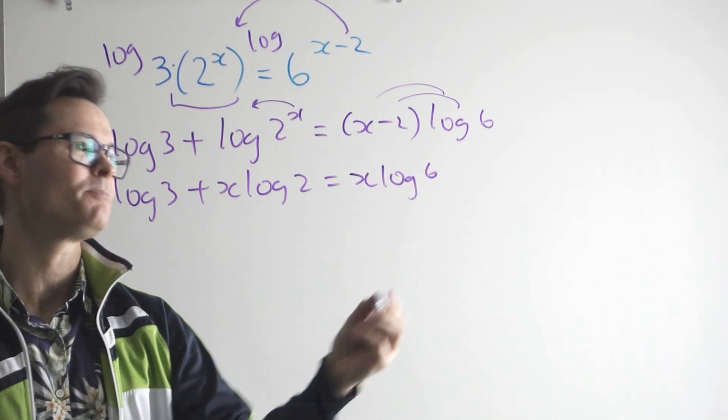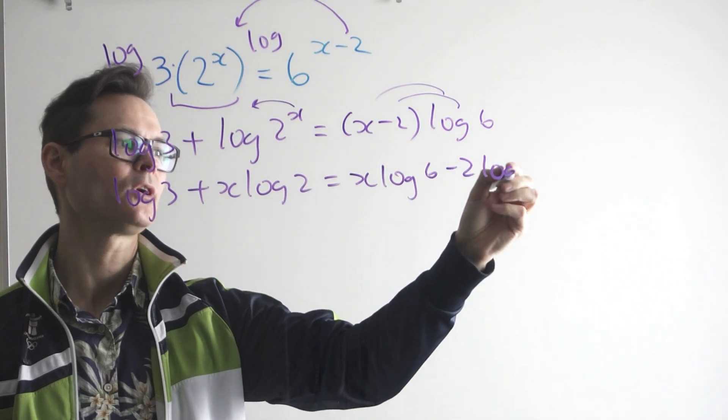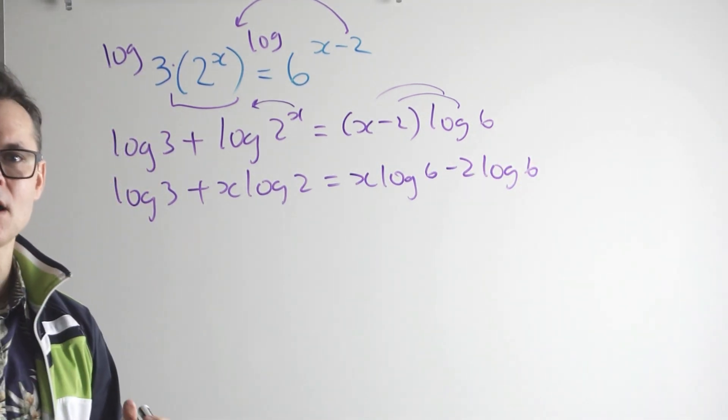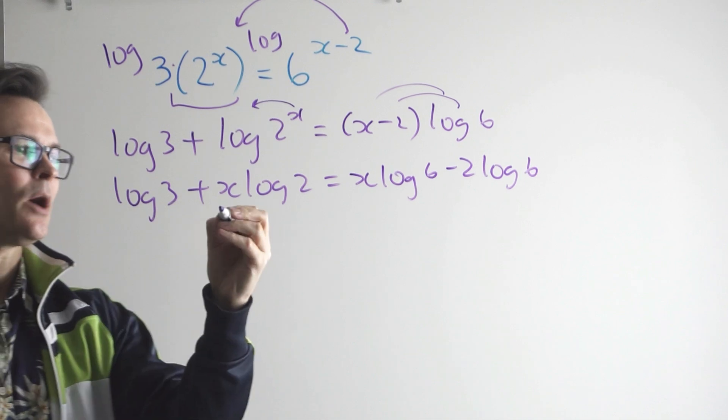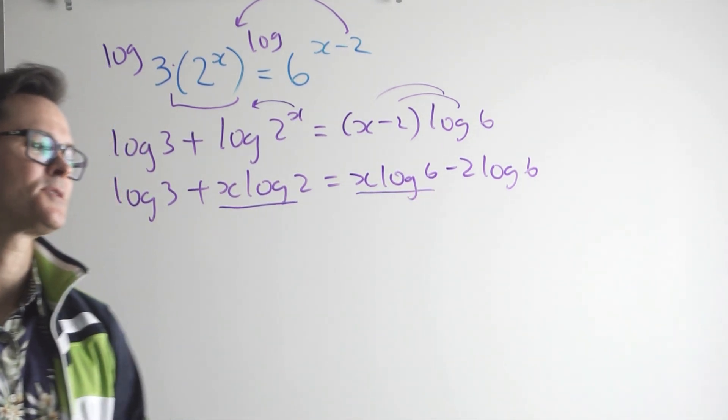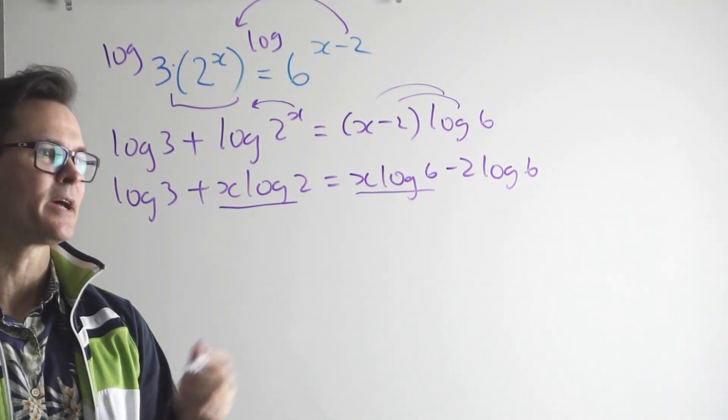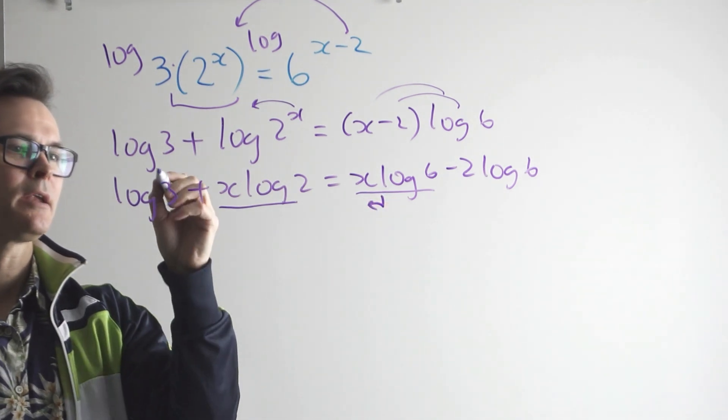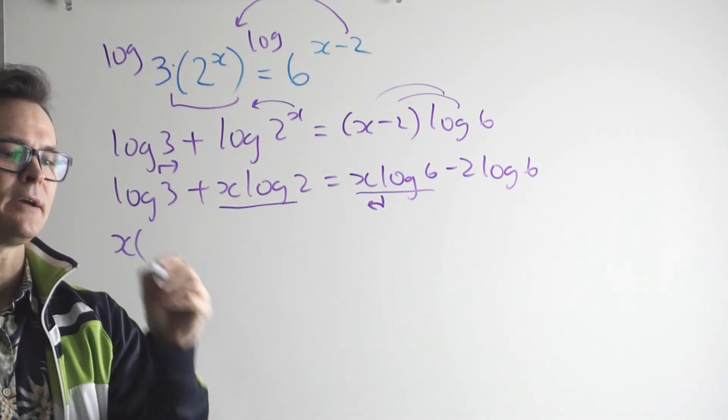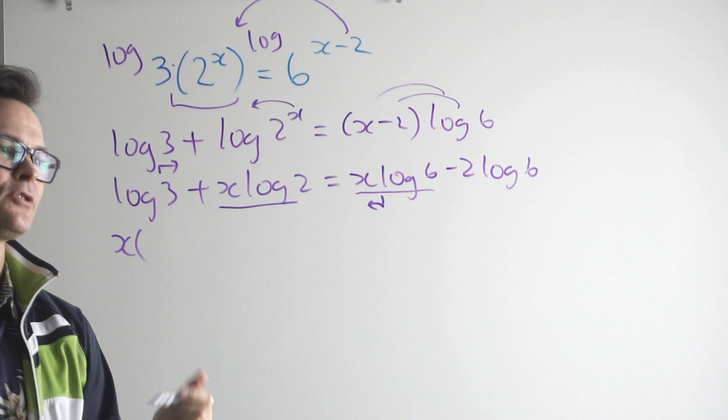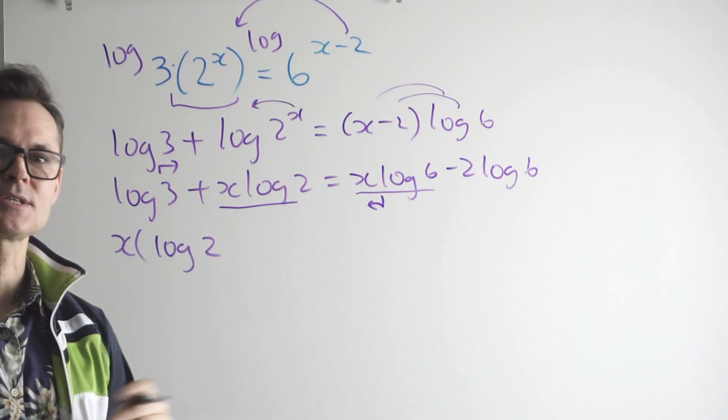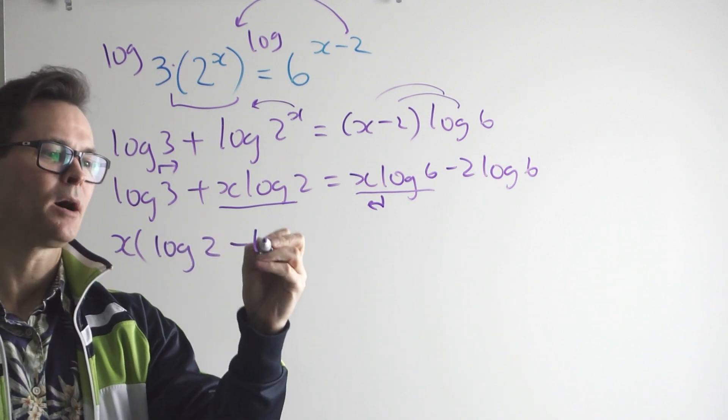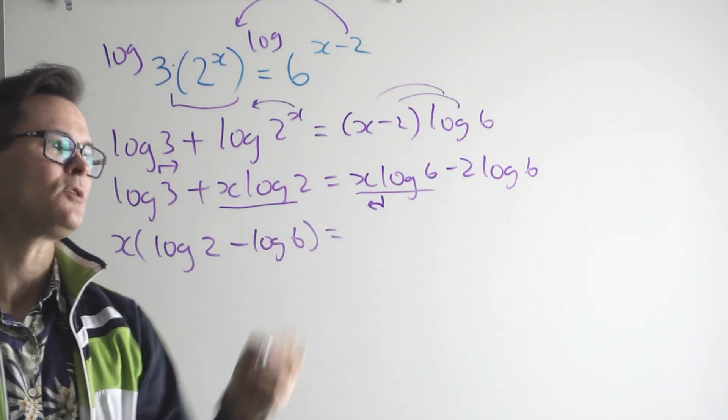Anyway, now I've got two terms with an x and I've got two terms that don't have an x. So I'm going to bring this over and I'm going to move that over. When I do, I'm going to pull out an x, I'm going to factor an x out. So I'm just going through the steps fairly quickly here. Minus the log of 6 equals negative 2 log 6. This goes over, becomes negative log 3.